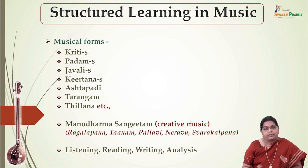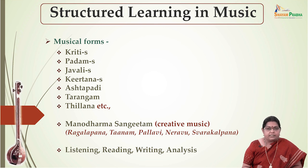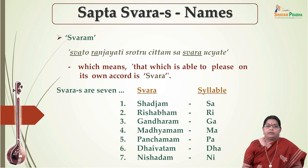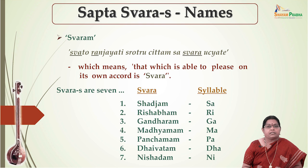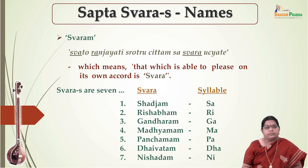Listening to good music, concerts of stalwarts, and reading various books on music will help in improving one's creative and analytical skills. Now let us see what these Swaras are and what their names are. Music is a universal language and like the alphabets of any language, a letter in music is Swaram. It is defined as Svato Ranjayati Srotru Chittam Sa Swara Uchyate, which means that which is able to please on its own accord — this is the Swara.